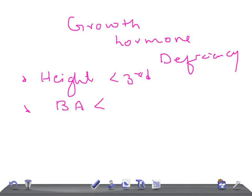Second, the bone age must be below the chronological age. Third, the pre-pubertal growth velocity should be less than four centimeters per year.